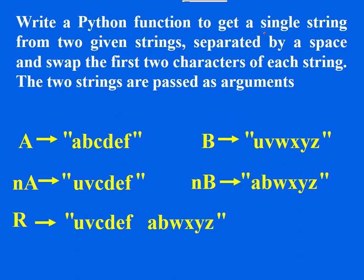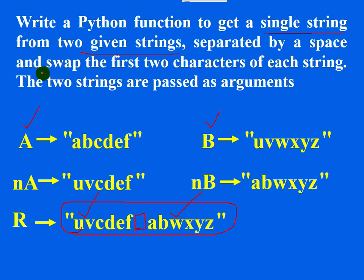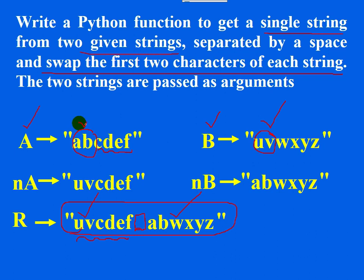The resultant string is new A concatenated with a space, concatenated with new B. The two strings are separated by a space in the resultant string, and the first two characters of each string are swapped. You can see UV followed by CDEF, and AB followed by WXYZ.